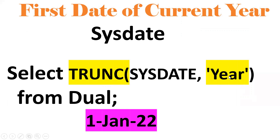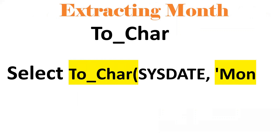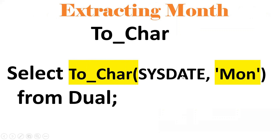Next, extracting the month. Using TO_CHAR(SYSDATE, 'MON') — TO_CHAR is the functionality to extract some part of the date. If I want to extract only the month, it will display September as the current month. TO_CHAR only extracts — if I put 'MON' it will display 'SEP'.